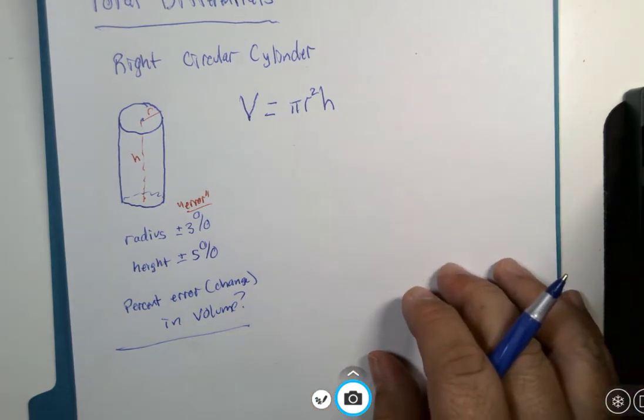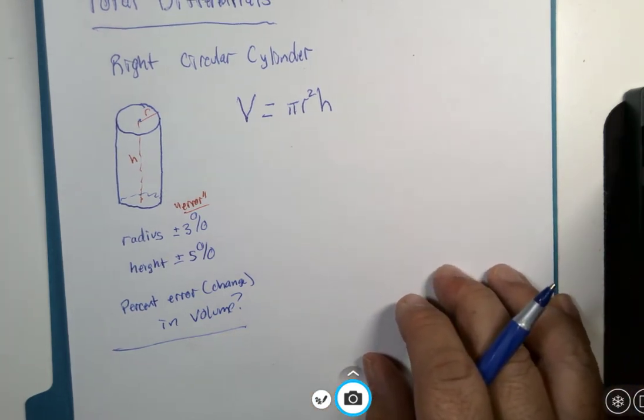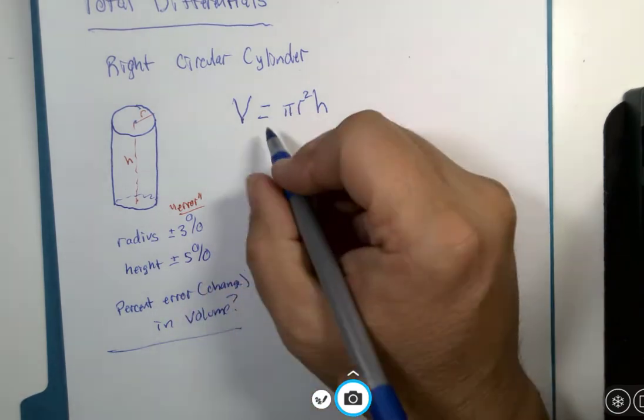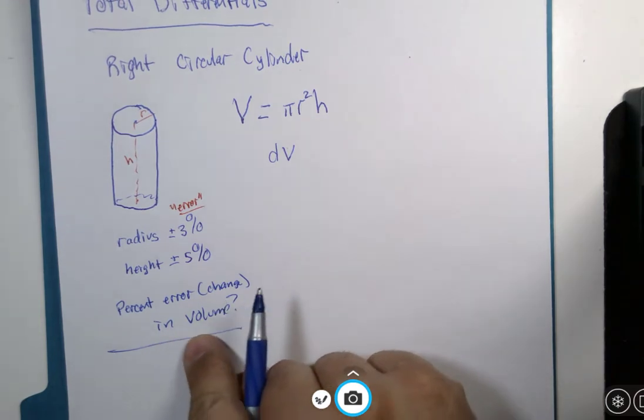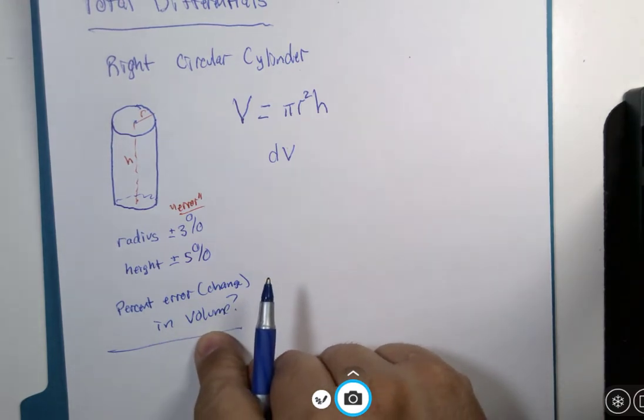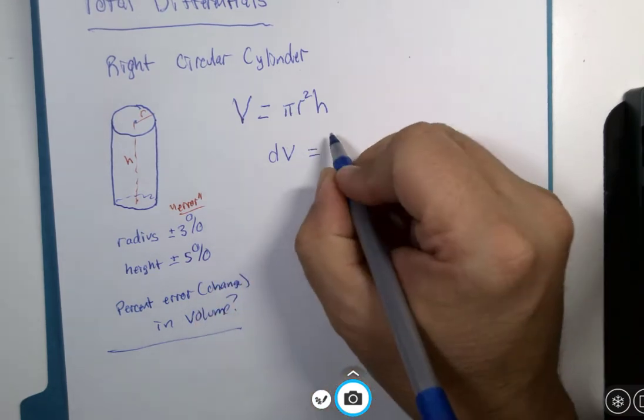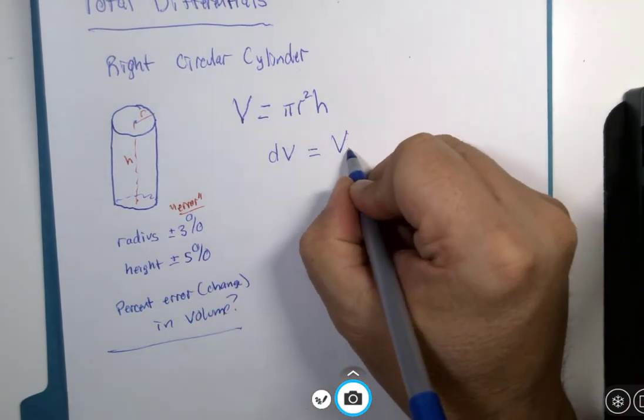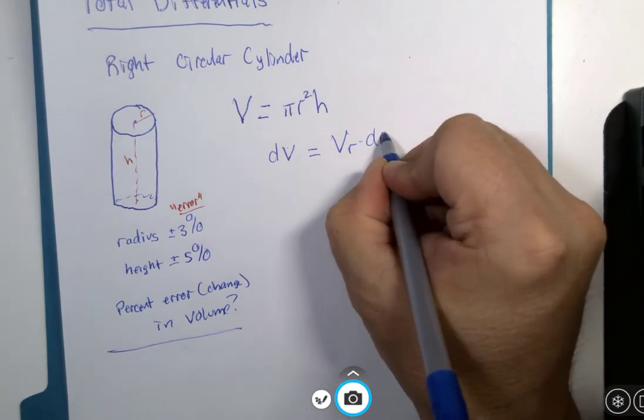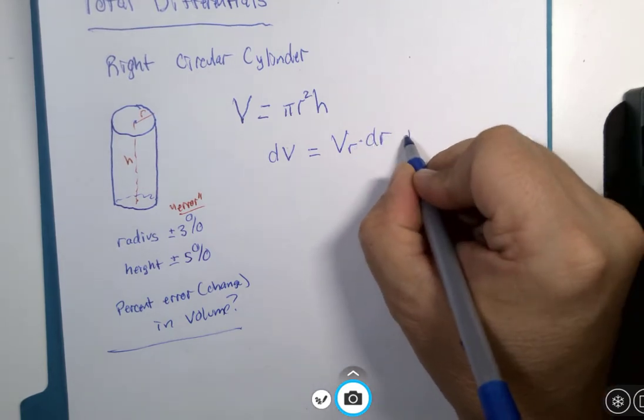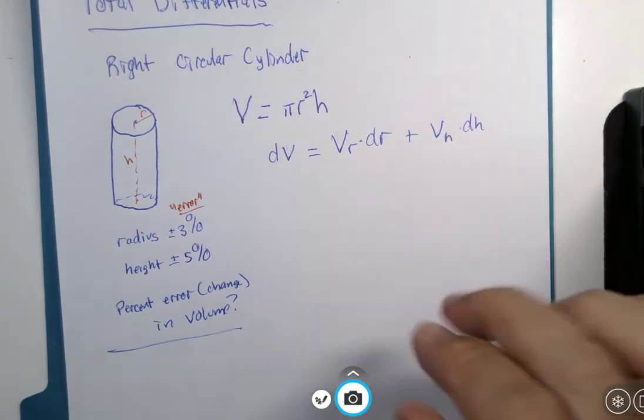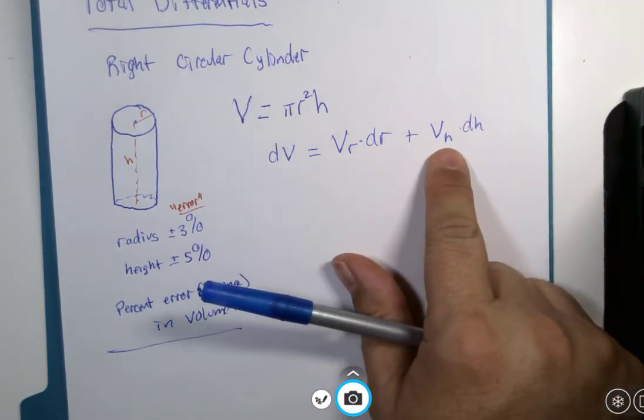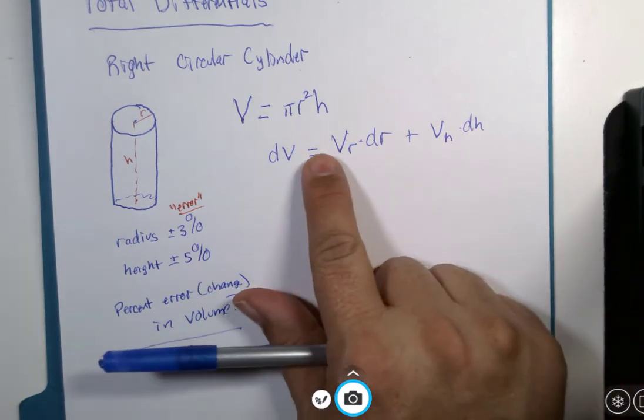So let me just show you again the beauty of the total differential. Again, we can't do this exactly but this differential gives us a very good approximation. So dV is going to be the derivative with respect to r times dr plus the derivative with respect to h times dh. One of these pairs for each of the variables that exists here.